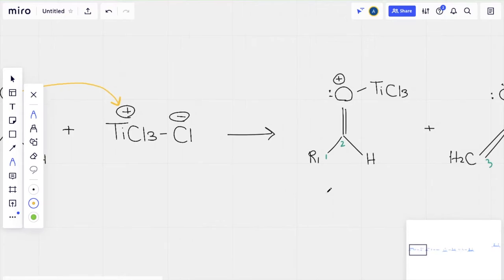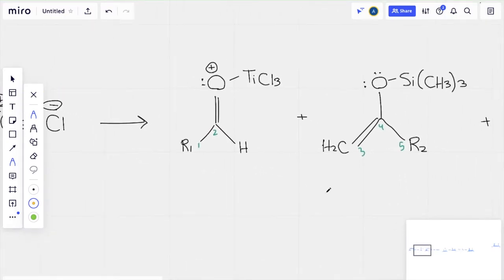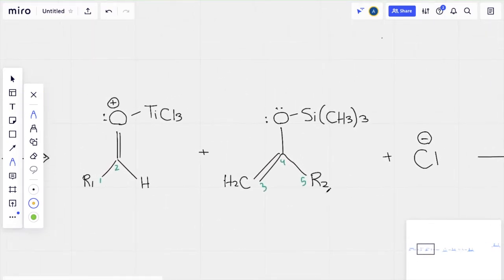So now moving on to the next step of this mechanism. As you can see this one looks a little bit more complicated. As before we do have our aldehyde bonded with our Lewis acid that we did in the previous step and now the oxygen has a positive charge.